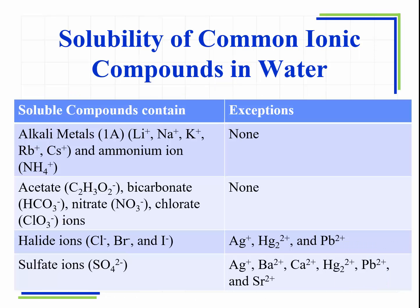So here are the solubility rules. The first list I have is of the compounds that are soluble. What you want to do is memorize what's on the left: alkali metals. I've listed what the alkali metals are, but you wouldn't have to memorize them individually — if you learn that alkali metals are soluble and you always have a periodic table, you've got that list. And then the ammonium ion as well. These are cations that are soluble with no exceptions. It doesn't matter what the anion is that's connected to that cation — ionic compounds are a cation and an anion together. If the cation is on this list, it will always be soluble. The next set gives you four anions that are always soluble with no exceptions.